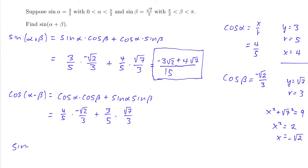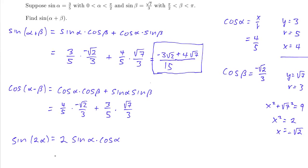How about sine of 2 alpha? Using the double angle formula for sine: it is 2 sine alpha times cosine alpha. Sine of alpha is 3 fifths and cosine of alpha is 4 fifths, so this is 2 times (3/5) times (4/5). Multiplying out: 2 times 3 is 6, times 4 is 24, over 5 times 5 is 25. So sine of 2 alpha equals 24 over 25.